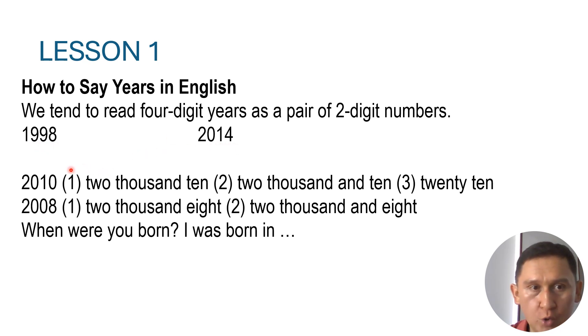We have two more examples right here. Let's check this number. Twenty-ten, the first way. Two thousand ten, the second way. Two thousand and ten, or the last one, twenty-ten.